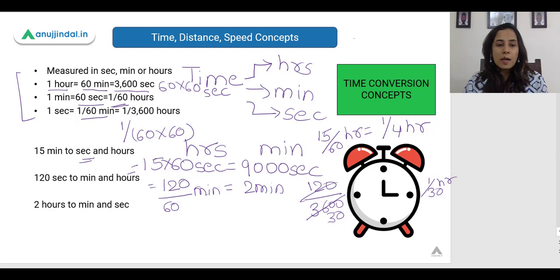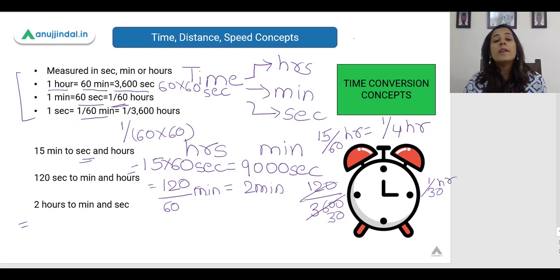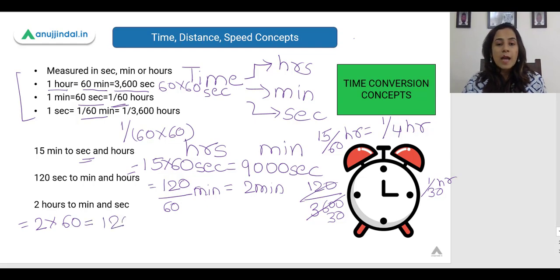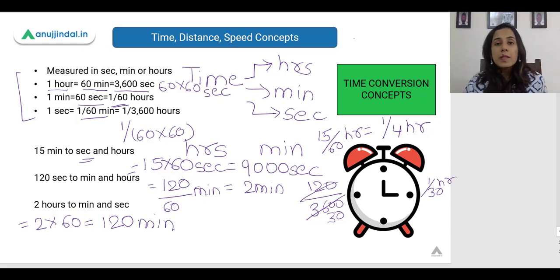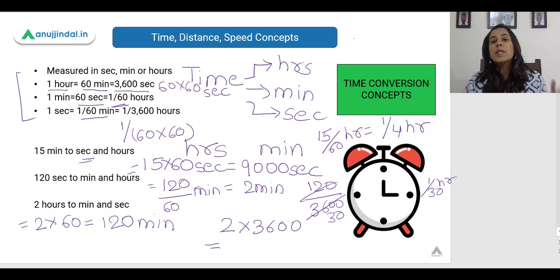Now let us convert 2 hours to minutes and seconds. To convert hours into minutes, we multiply by 60 — so 2 into 60 gives 120 minutes. And if we want to convert to seconds, we multiply by 3600. So 2 hours is 2 into 3600 seconds, which is 7200 seconds.